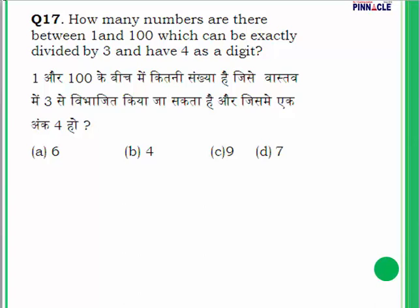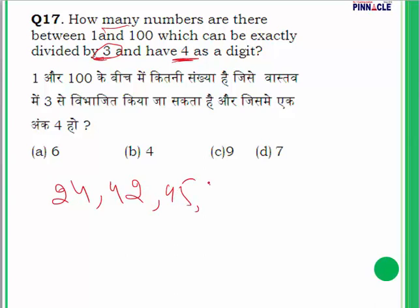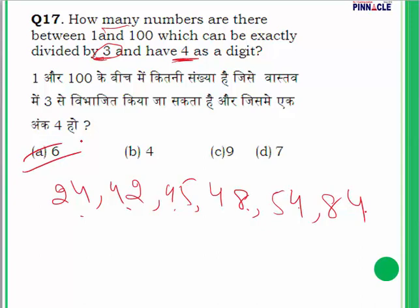Question number 17: how many numbers between 1 and 100 are exactly divisible by 3 and have 4 as a digit? The numbers are: 24, 42, 45, 48, 54, and 84. Total 6 numbers.